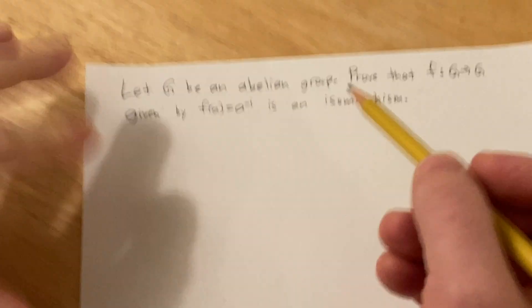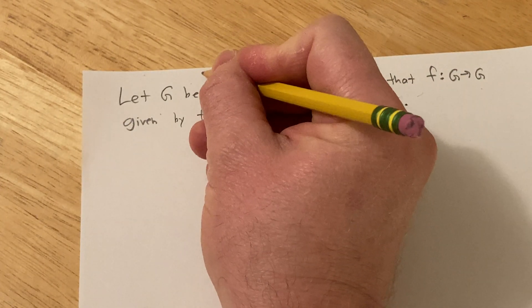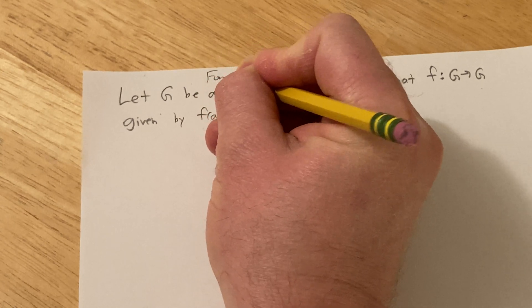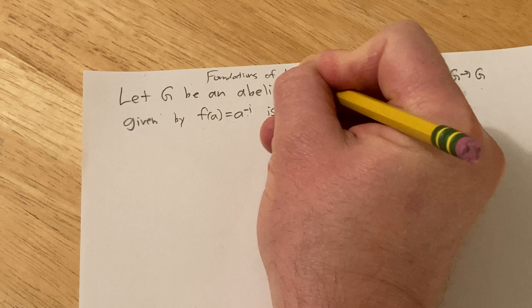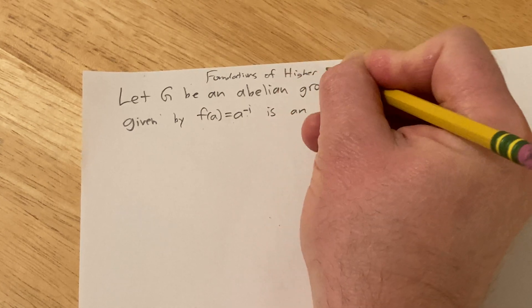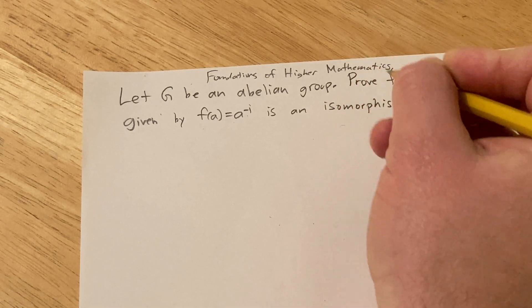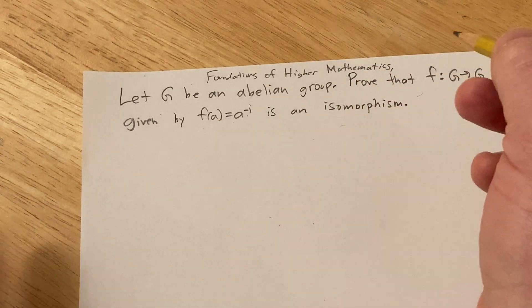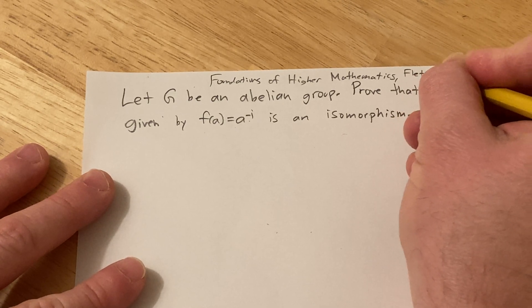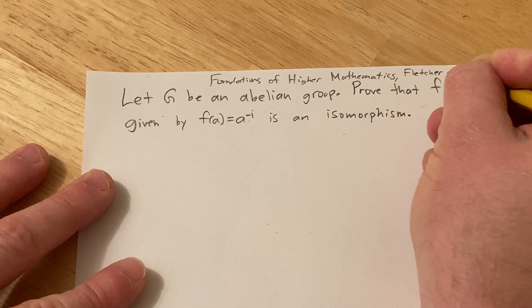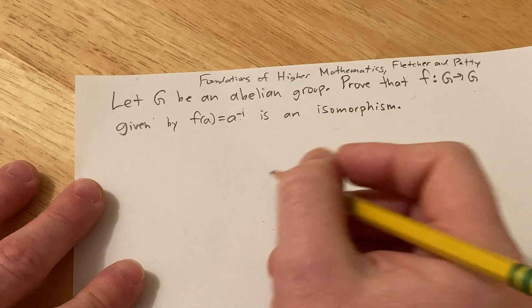So this is an exercise from some random book I have. The book is called Foundations of Higher Mathematics and this is a problem that's found in several books, but this book is pretty good because it teaches you how to write proofs and it actually has some group theory in it. This is the one by Fletcher and Paddy and I believe the book was from late 80s early 90s.